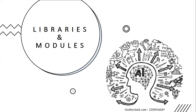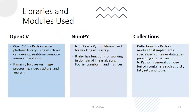The libraries and modules used in this project are three in particular: OpenCV, NumPy, and Collections. OpenCV is a Python cross-platform library using which we can develop real-time computer vision applications. NumPy is a built-in library of Python used to work with arrays. Collections is a Python module that implements container data types such as dict, list, set, and deque.